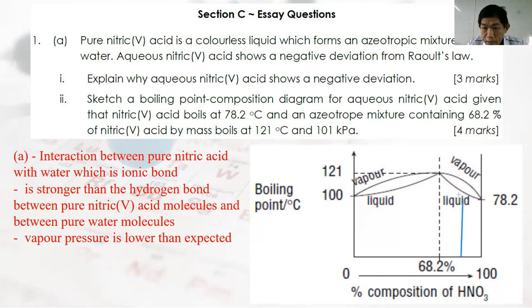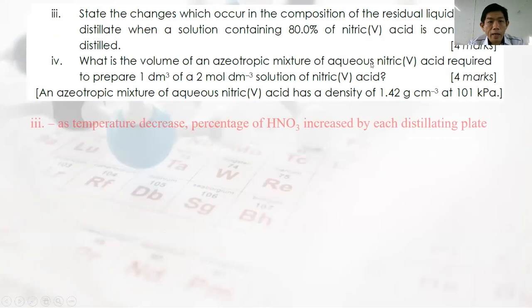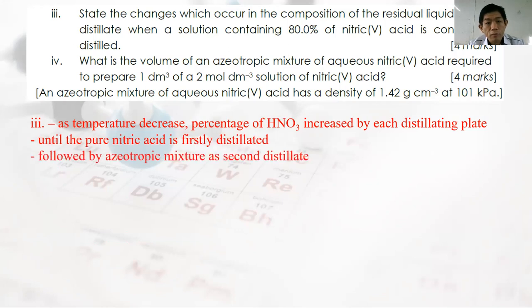Essay Question 1c: When a mixture of 80% nitric acid is fractionally distilled, the composition of the residual liquid changes. Since 80% is greater than the azeotropic composition of 68.2%, the first distillate is pure nitric acid. As distillation continues, composition decreases toward the azeotrope. The second distillate will be the azeotropic mixture. The residue left will be pure water with some impurities.